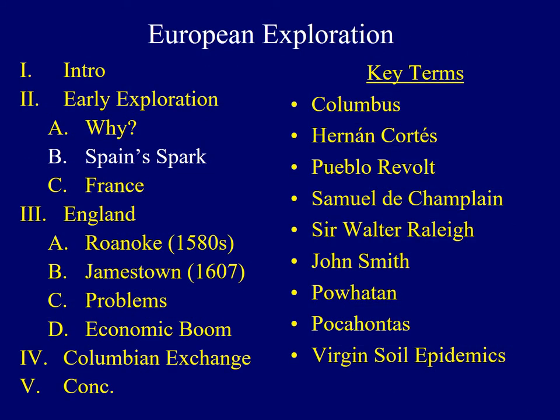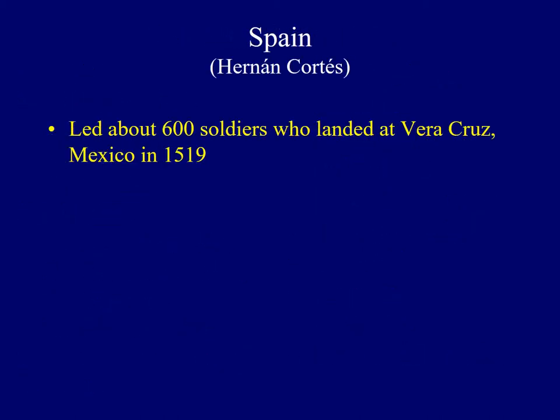We'll now continue with the discussion of Spanish exploration by studying the conquest of Mexico, and then move northward to focus on events in what was known as New Mexico. Cortes was another important Spanish explorer. In 1519, he landed in what is now Veracruz, Mexico, with about 600 soldiers. His ultimate goal was to bring back wealth and riches to Spain in the form of gold and other valuable jewels.